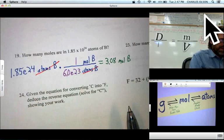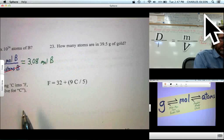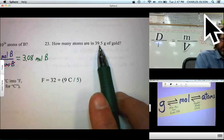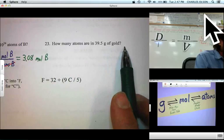Okay. Last question, number 23. How many atoms are in 39.5 grams of gold? Well, let's check our road map.